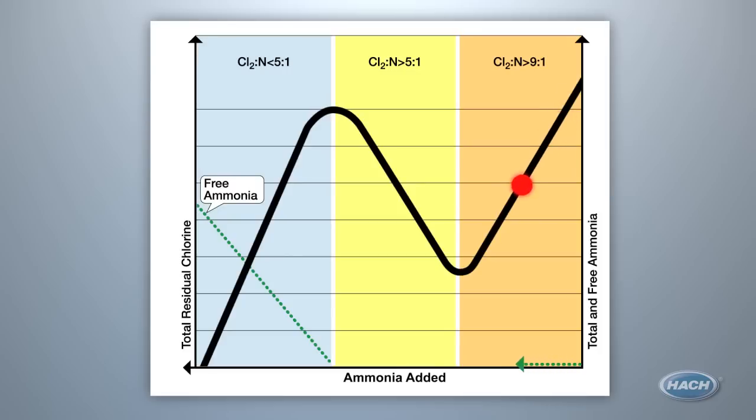Ammonia is added to the chlorinated water just prior to entrance into the distribution system. The dose is increased until a small trace of free ammonia is detected, ensuring you are in zone one and maximum monochloramine residual has been reached.